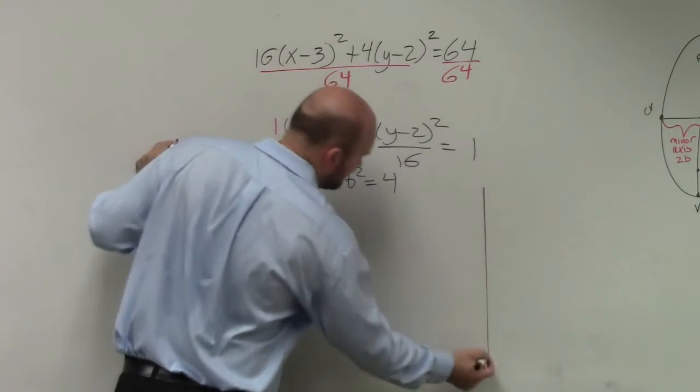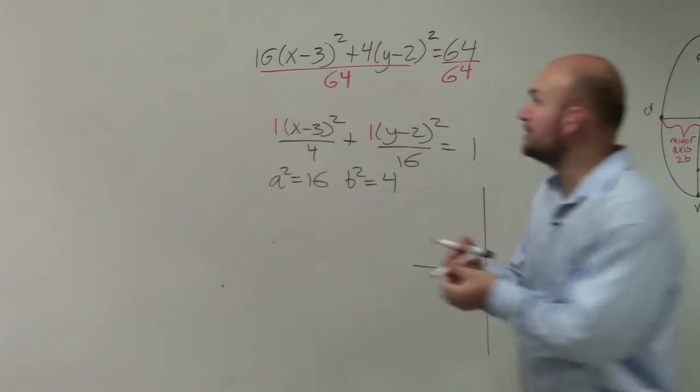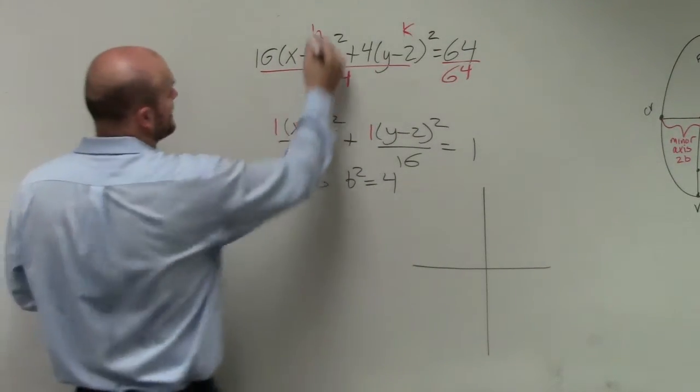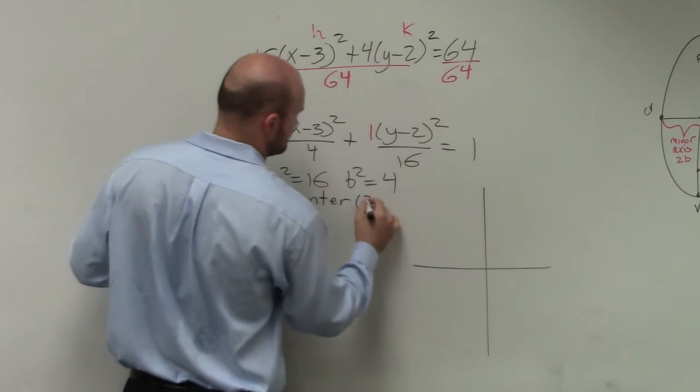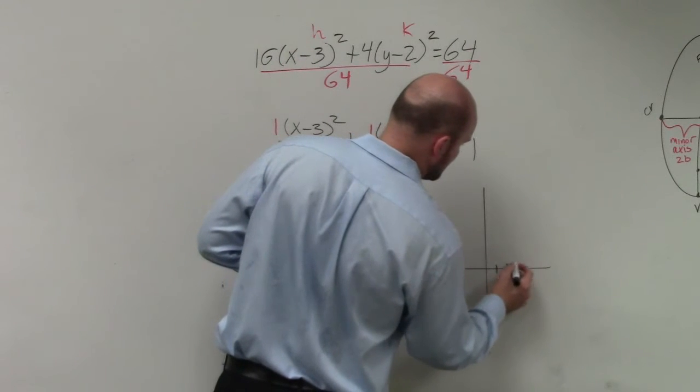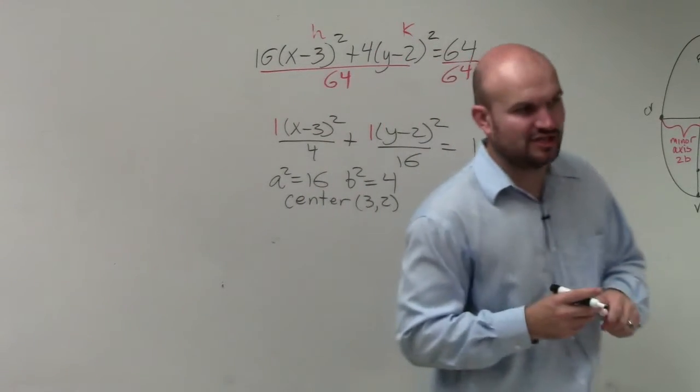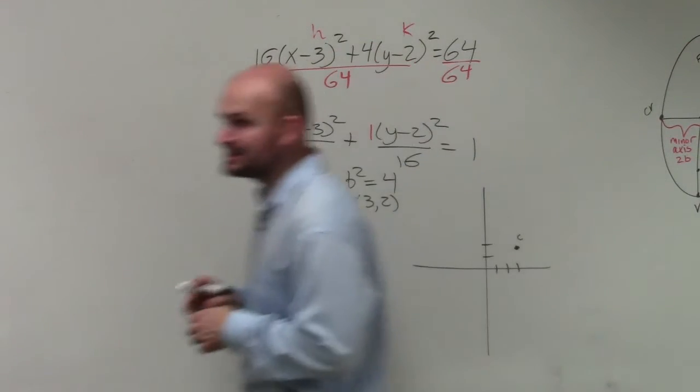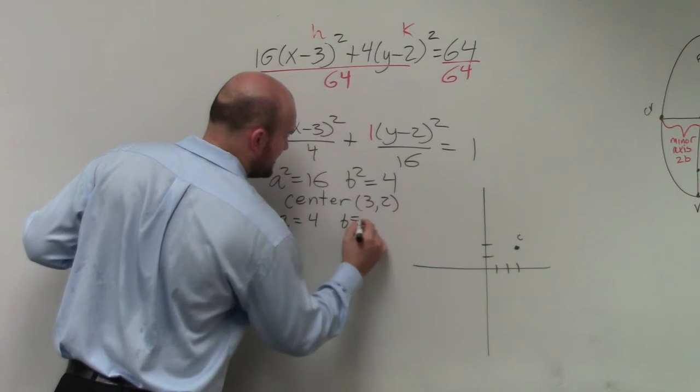I usually think it's helpful to plot the information. The center is h comma k, so the center is 3 comma 2. From the origin, I'll go over 3 and up 2. If a squared is 16 and b squared is 4, that means a equals 4 and b equals 2.